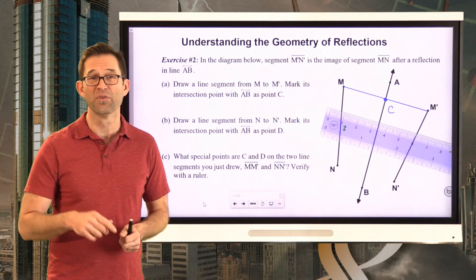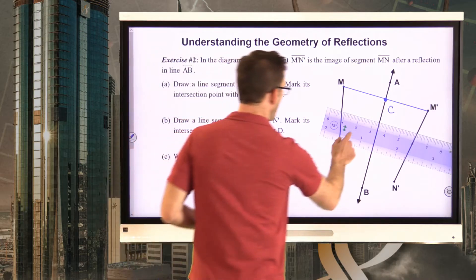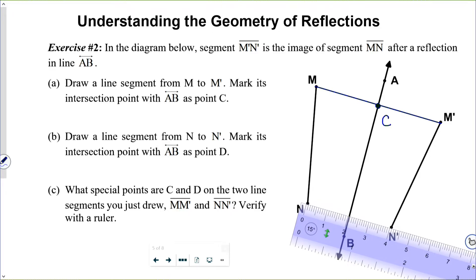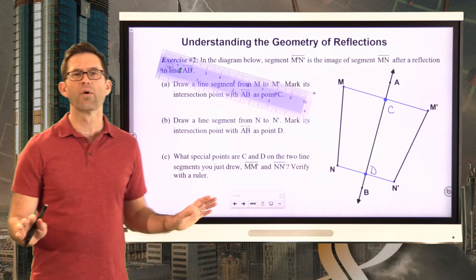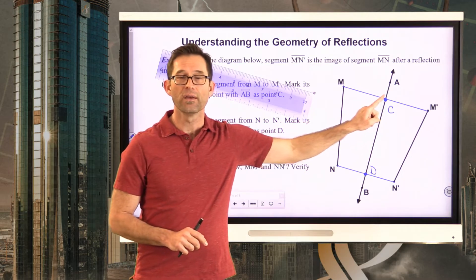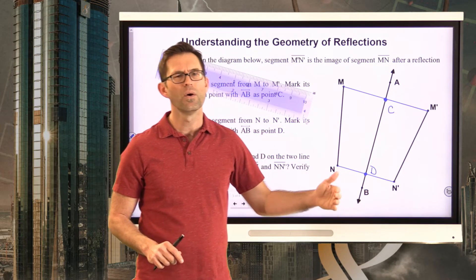Letter B: draw a line segment from N to N' and mark its intersection point with AB as point D. Letter C asks: what special points are C and D on the two line segments MM' and NN'? Verify with a ruler.